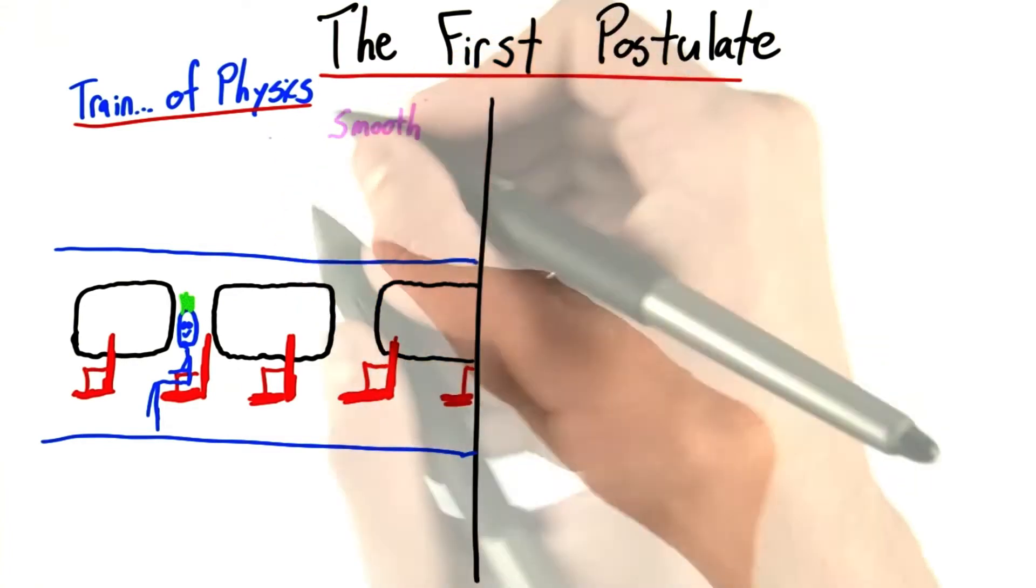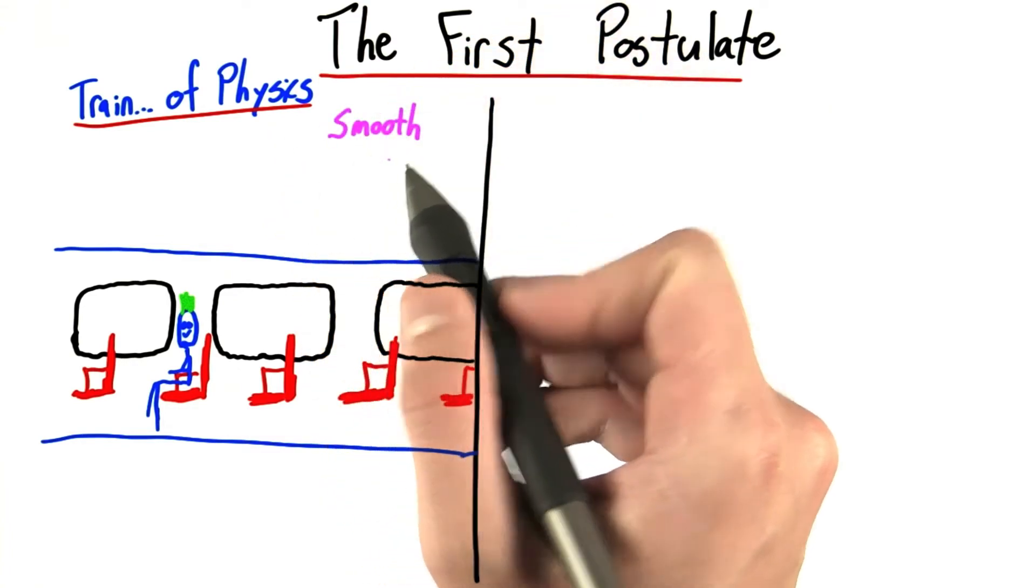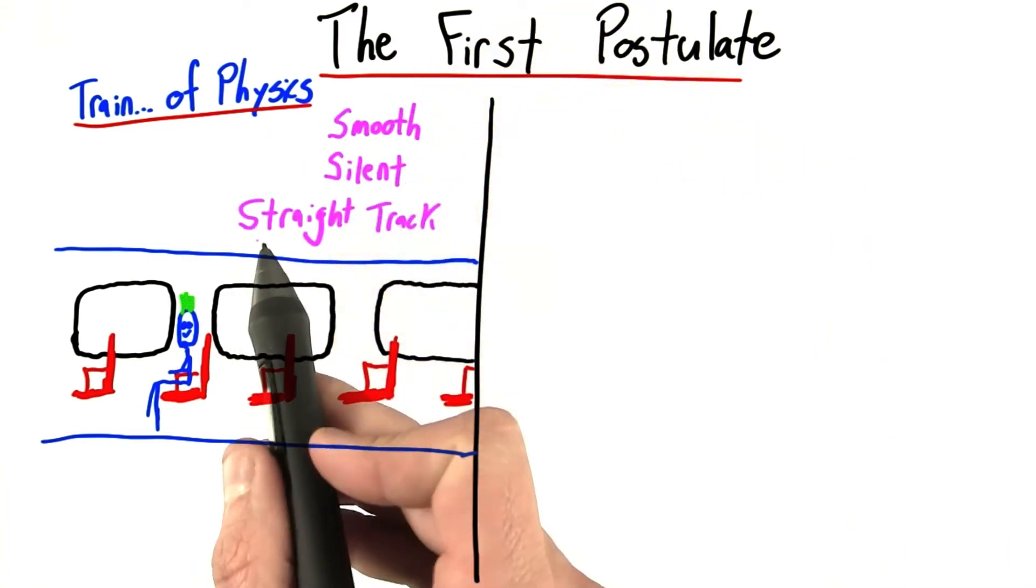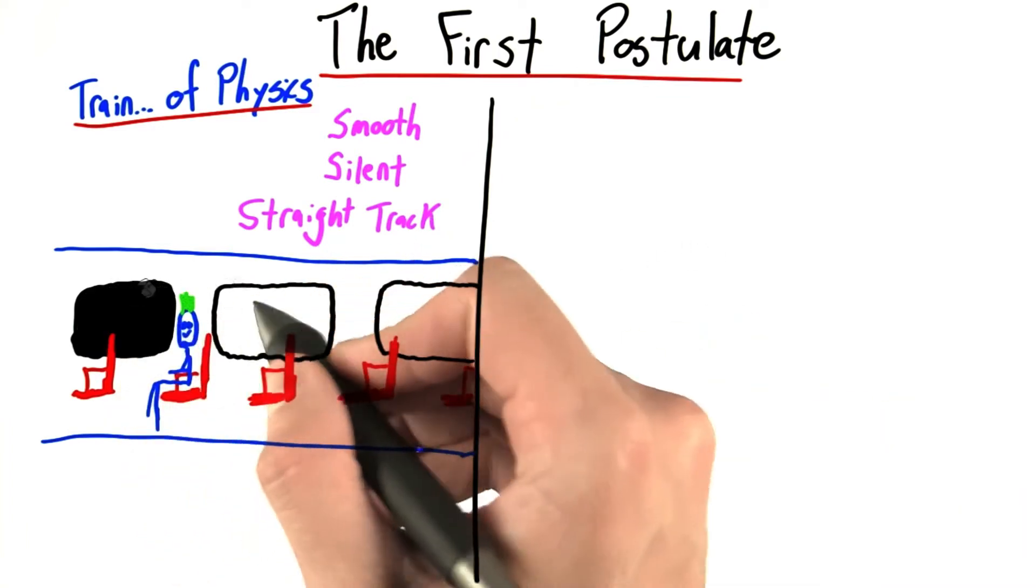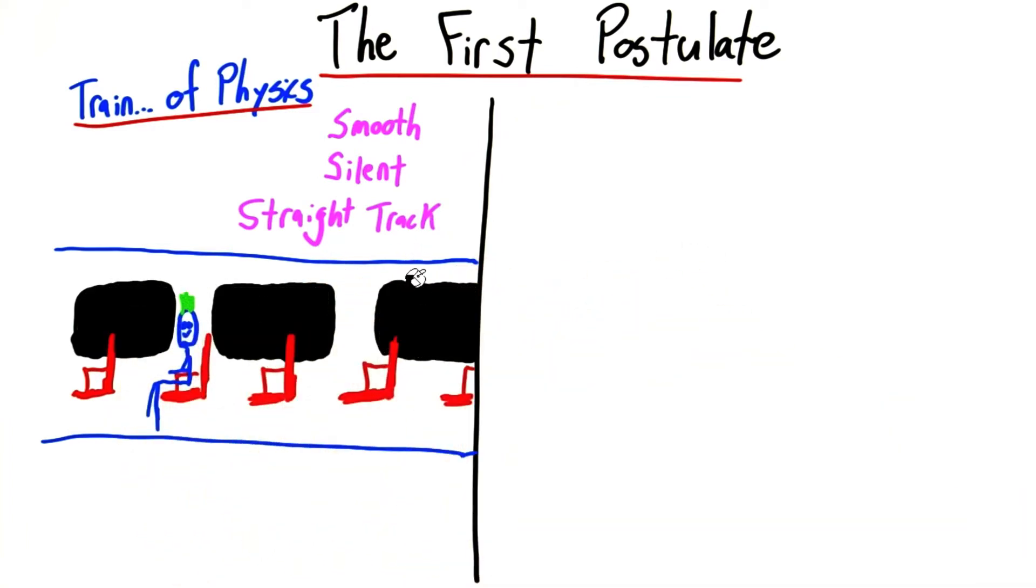And the thing that's so nice about the train of physics is that it has a completely smooth ride, it's silent, and the track is completely straight. Also, the windows are blacked out, so you can't see outside.